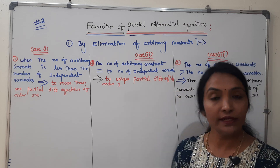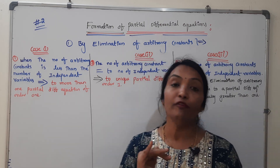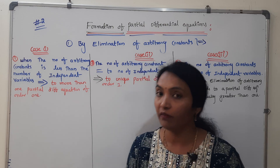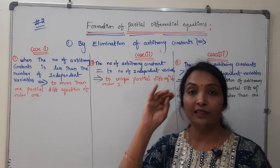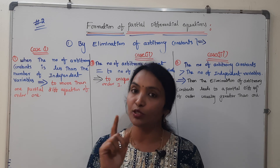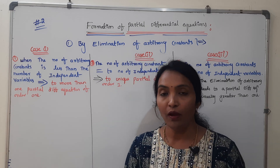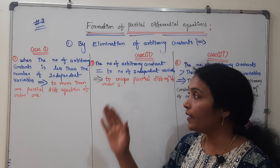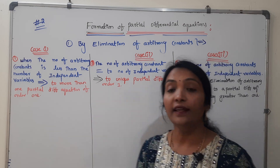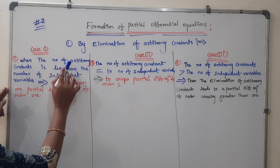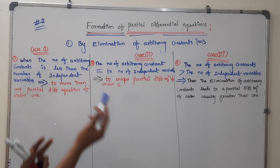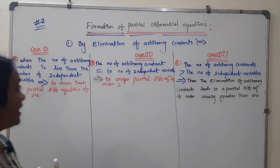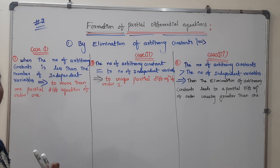By elimination of arbitrary constants — based on this, and elimination of arbitrary functions. In this class, we will talk about elimination of arbitrary constants. It is very easy to identify and solve — 3 cases. The first case: the number of arbitrary constants is less than the number of independent variables.